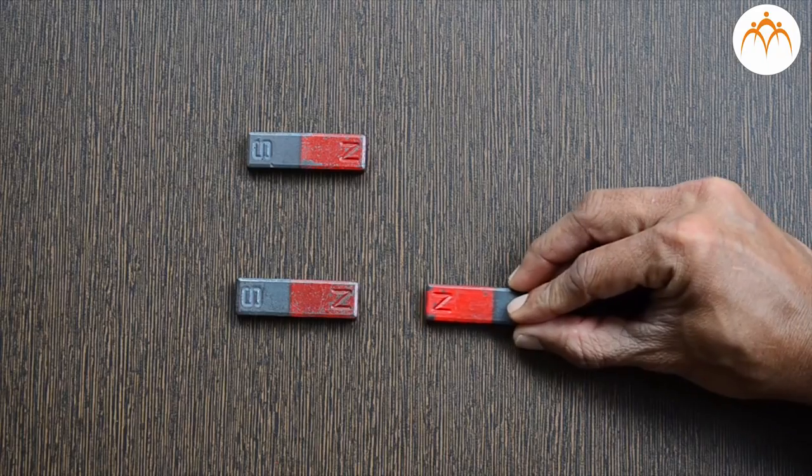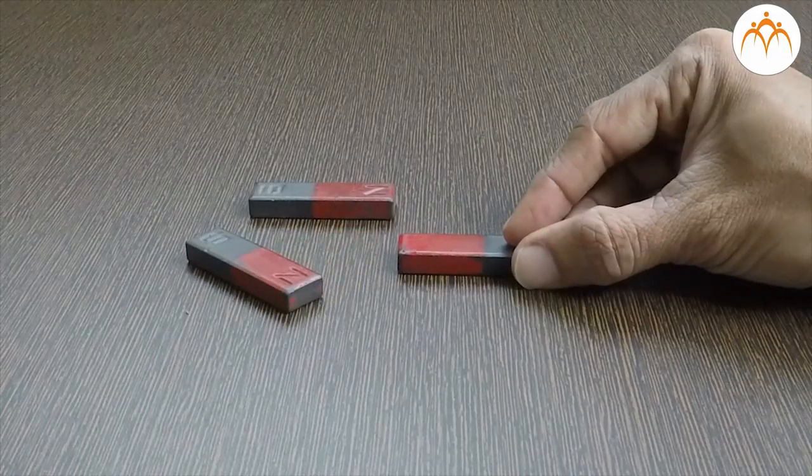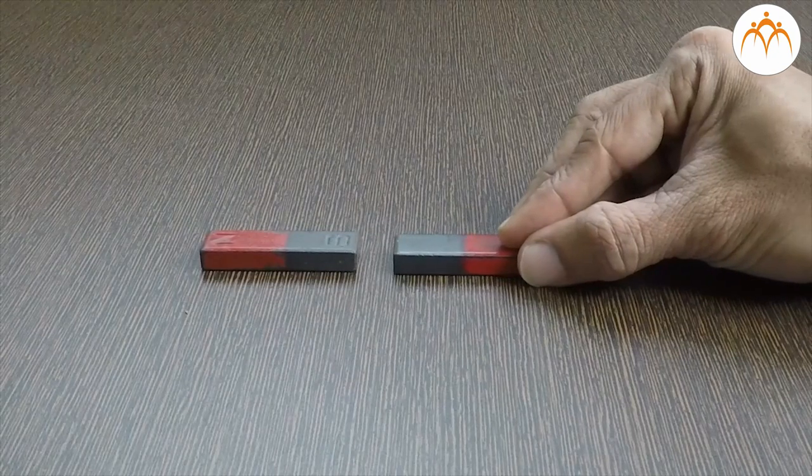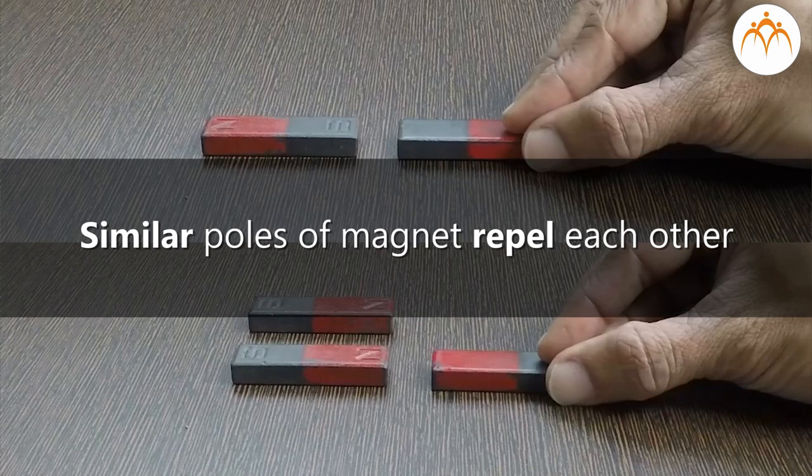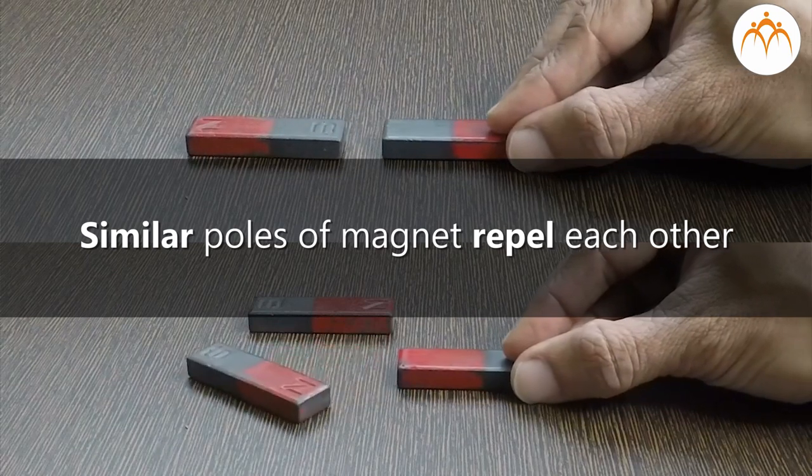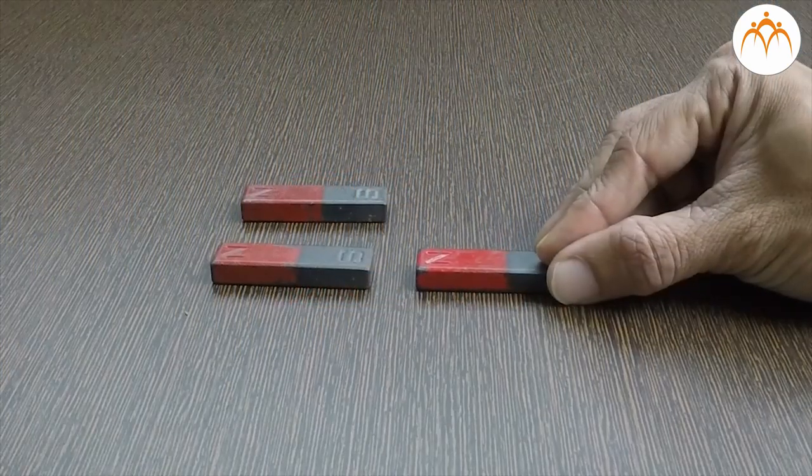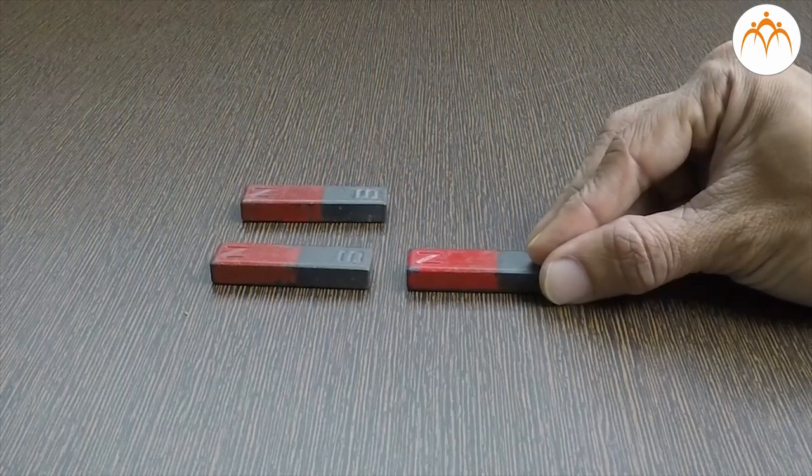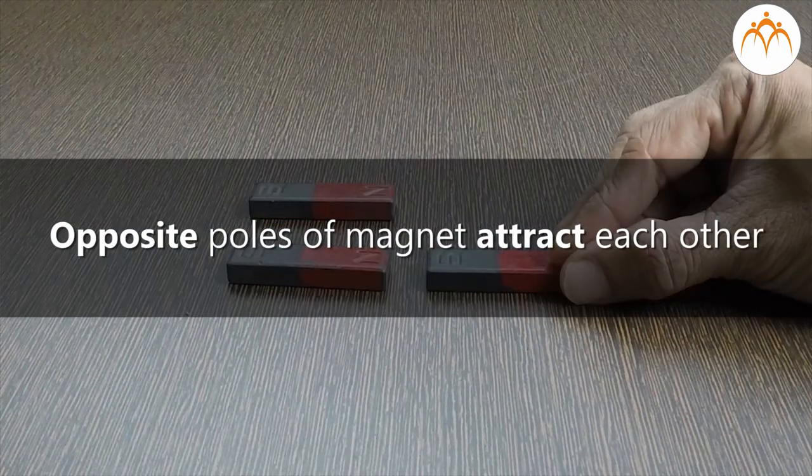If I bring two ends of the magnet marked with N that is north pole, they repel each other. Same is true with two ends marked with capital S. We can say that similar poles repel each other. If I bring opposite poles, north pole marked as N and south pole marked as S, they attract each other. We can say that opposite poles attract each other.